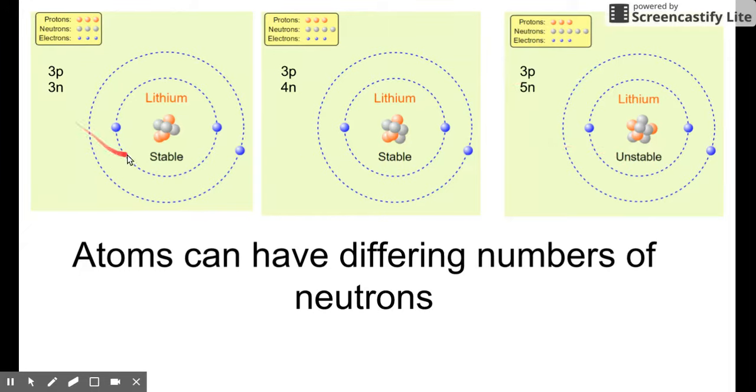Notice that this one has three neutrons and it's stable. This one has four neutrons and it's still stable. Now this one has five neutrons and it becomes unstable. The idea behind this is atoms can have different numbers of neutrons. Even atoms can have different numbers of neutrons and still be stable. But there are lithiums out there that have five neutrons that are unstable. So you can have both stable and unstable lithium atoms or atoms in general. Just realize that there's more than one possibility of an atom to exist with different numbers of neutrons.